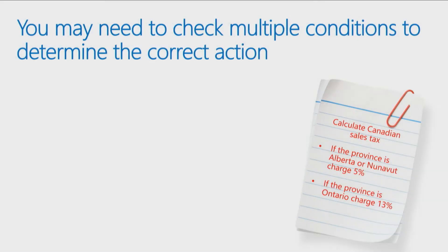Sometimes I have multiple conditions and I need to figure out what the correct action is. If you're in the province of Alberta or Nunavut, you have a tax rate of 5% in Canada. And if you're in the province of Ontario, the tax rate is 13% — a big difference. You have to make sure you calculate it correctly.